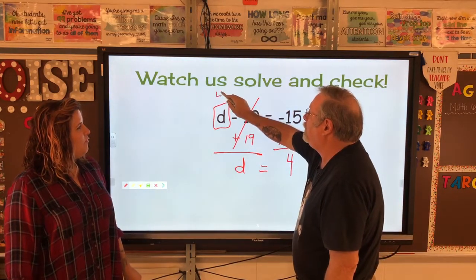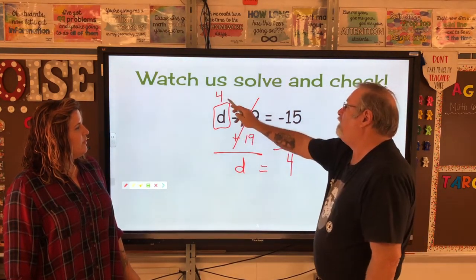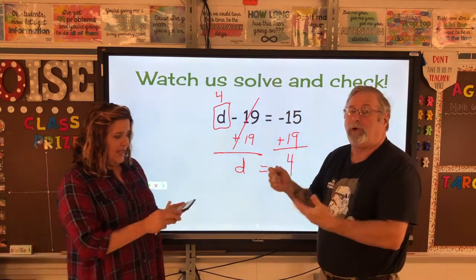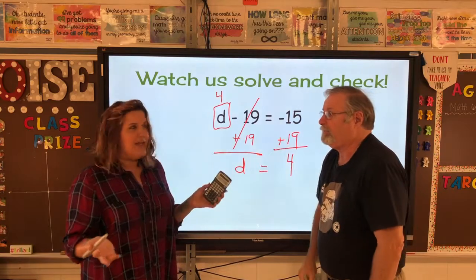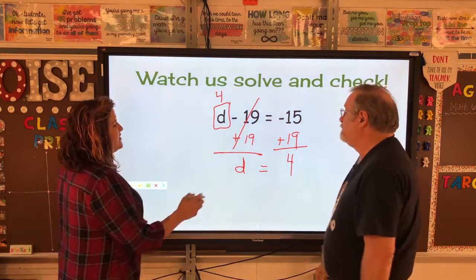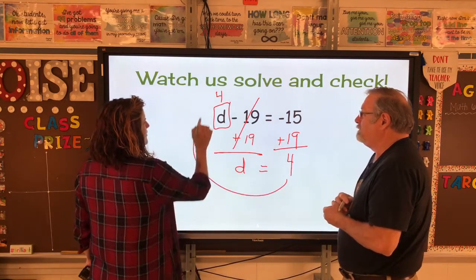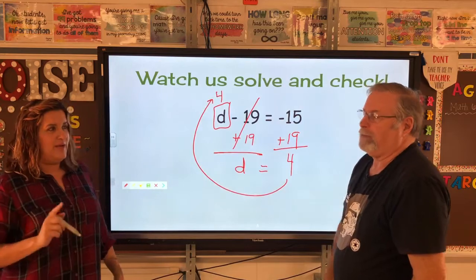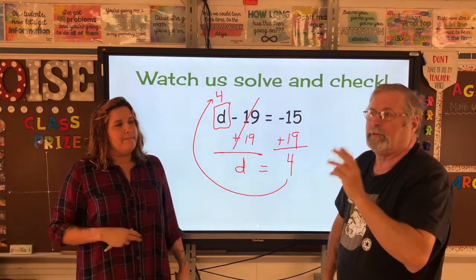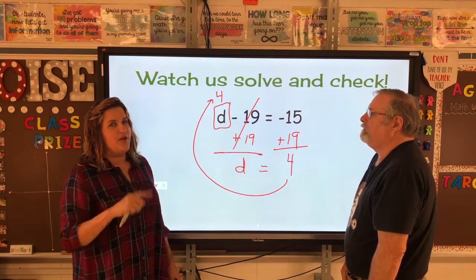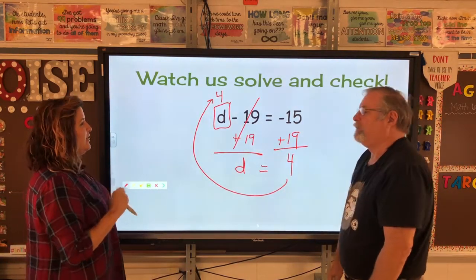And if you wanted to prove it, the best way to do is always plug it back in and use that calculator, Desmos calculator. So we're going to take the 4, we're going to put it here. So we're going to say 4 minus 19 equals negative 15. And if you plug it into your calculator and it doesn't equal negative 15, then you did something wrong. This is called variable substitution. We substitute the number we got back into the variable. But it is a good way to check, it's also a proof to your equation.